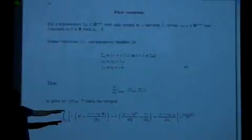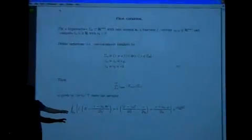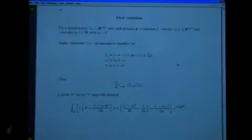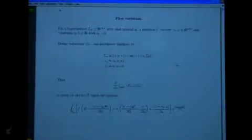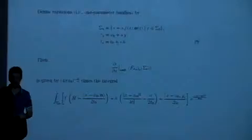When we computed the first variation of these functionals, the critical points were indeed self-shrinkers, and this was true even when we allowed variations of all three parameters simultaneously. You might say that doesn't add anything to the picture — and at this point it doesn't, because in the first variation those drop out. But when we compute the second variation, those quantities will add something to the picture.